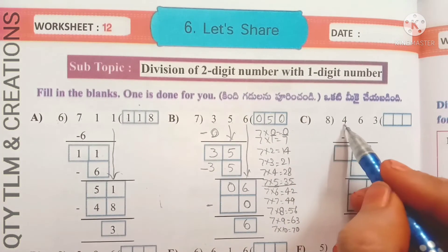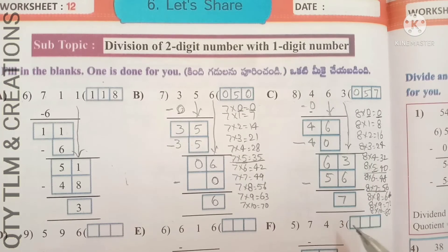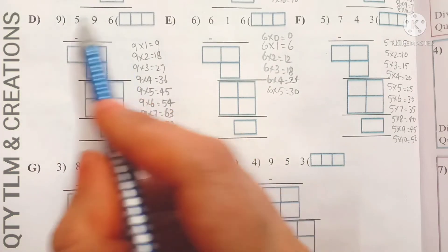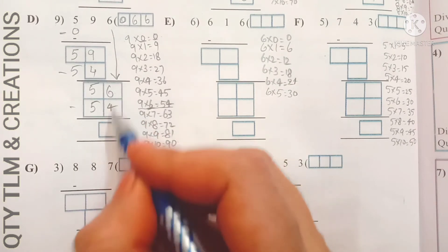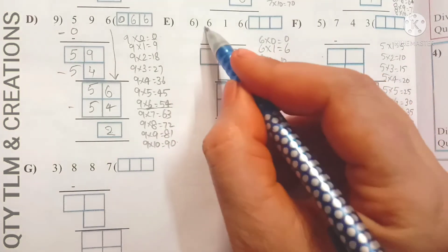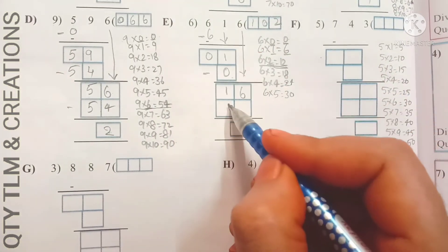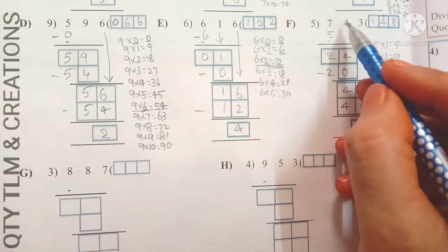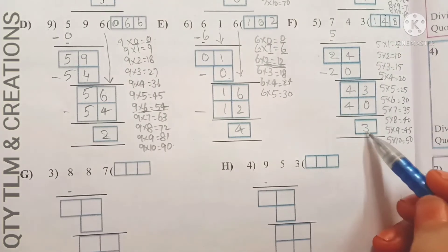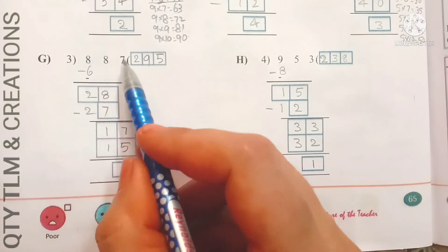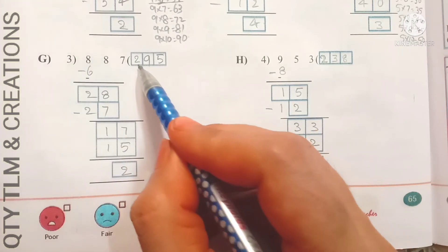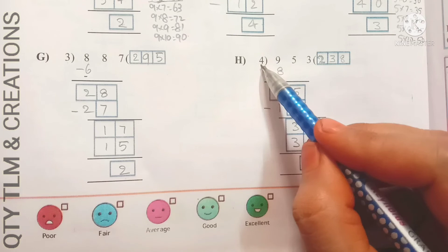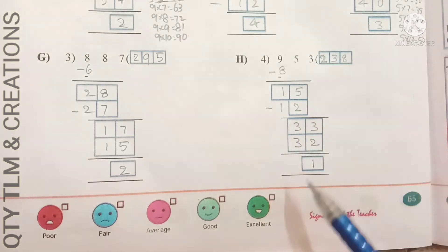Next C: 463 divided by 8 — quotient is 57, remainder is 7. Next D: 496 divided by 9 — quotient is 66, remainder is 2. Next E: 616 divided by 6 — quotient is 102, remainder is 4. Next F: 743 divided by 5 — quotient is 148, remainder is 3. Next G: 887 divided by 3 — quotient is 295, remainder is 2. Next H: 953 divided by 4 — quotient is 238, remainder is 1.